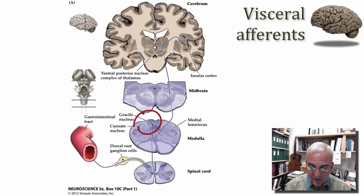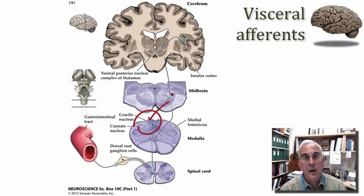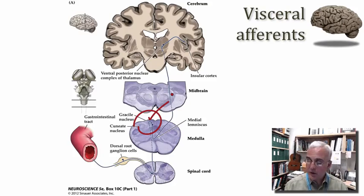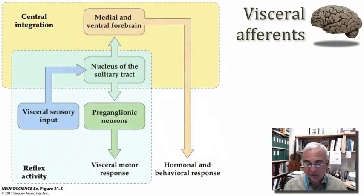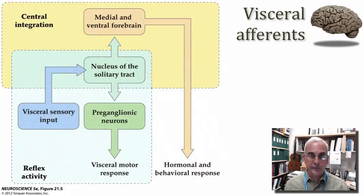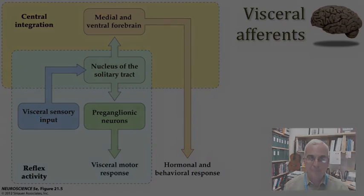The gracile nucleus is a good candidate where some visceral pain might be referred to a more peripheral target. Let's get back to thinking more broadly about the central integration of visceral sensory signals as the output of the visceral motor system is organized and ultimately coordinated.